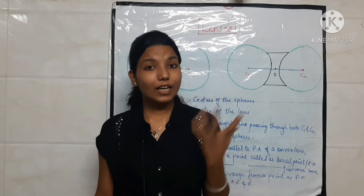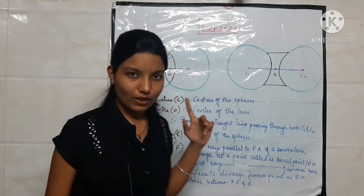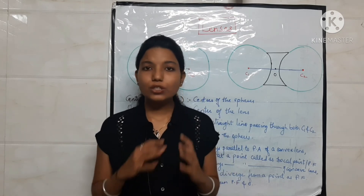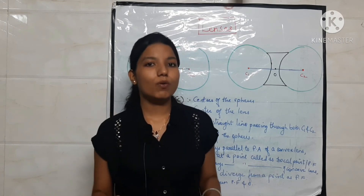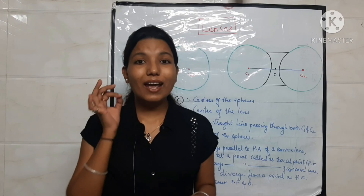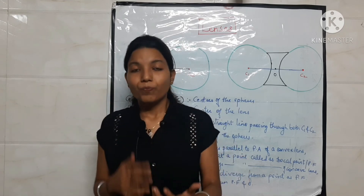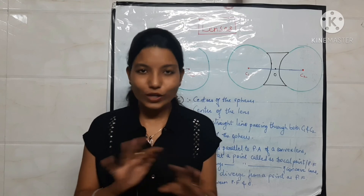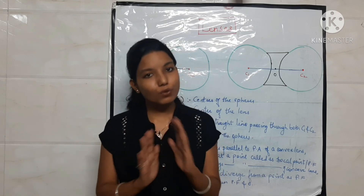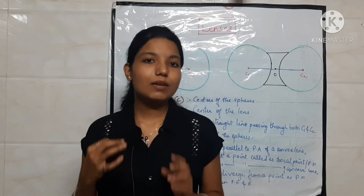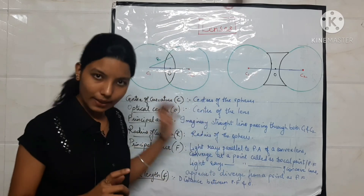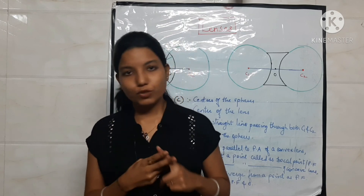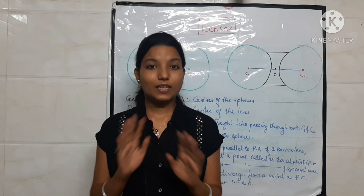In the next video we will see the rules for image formation for both convex and concave lenses. We will start with convex — it has 6 cases, and a tabular form is given. I will be drawing each and every case so it will be helpful for you. If you need additional help, you can refer to the mirror video as well, but don't get confused — focus only on lenses. So please watch this video properly, and I'll make the next video soon. Till then, take care everyone, bye! Keep studying, keep enjoying!